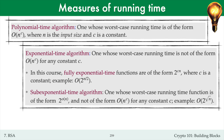In this course, fully exponential time functions are of the form 2 to the power c times n, where c is a constant and n is the input size. For example, big O of 2 to the power n over 2. Here, the constant c is a half.